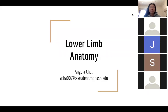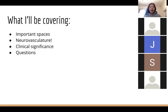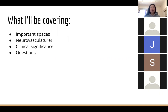Hey everyone, I'm Angela and I'll be going through lower limb anatomy today. I'd like to acknowledge previous revision lectures and PSP slides for giving me inspiration for this presentation. I hope you've been through the bones and muscles of the lower limbs before, so instead I'd like to revise some anatomy of the important spaces and neurovascular structures, as I think these are quite important for understanding the presentation of common pathologies.